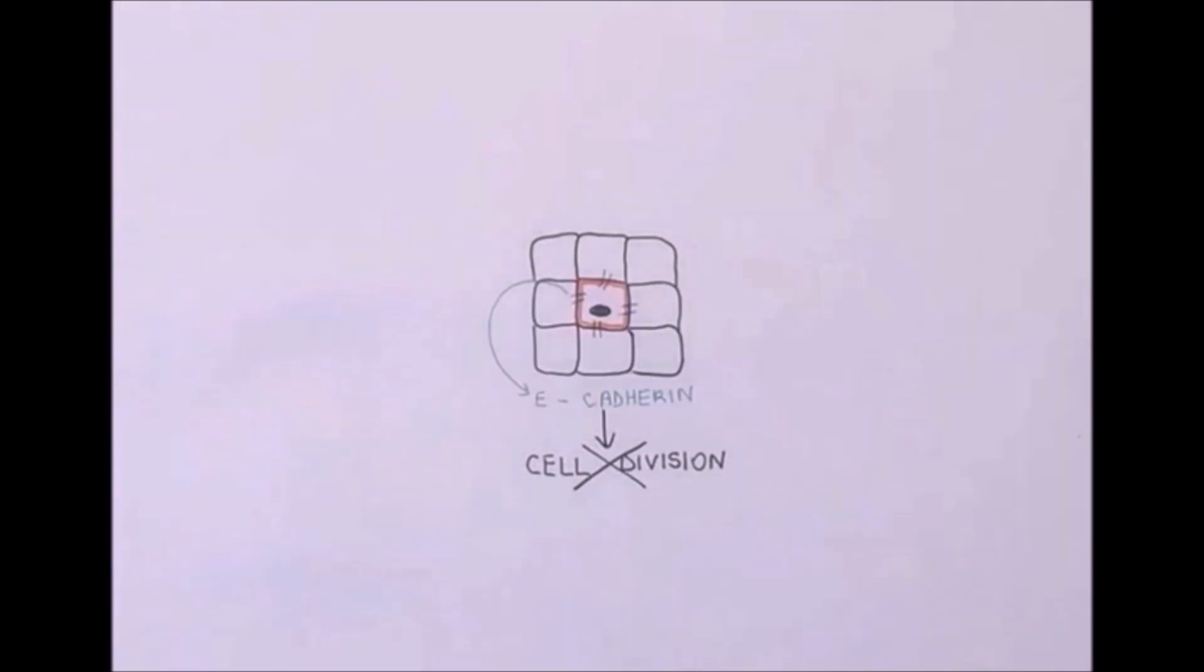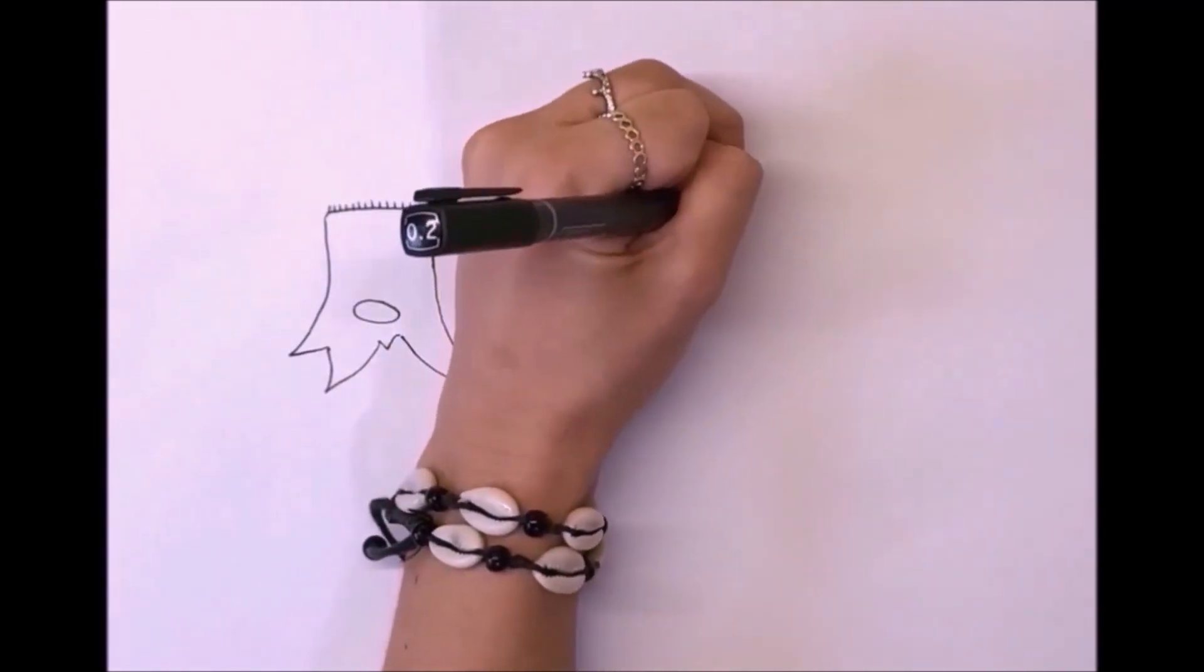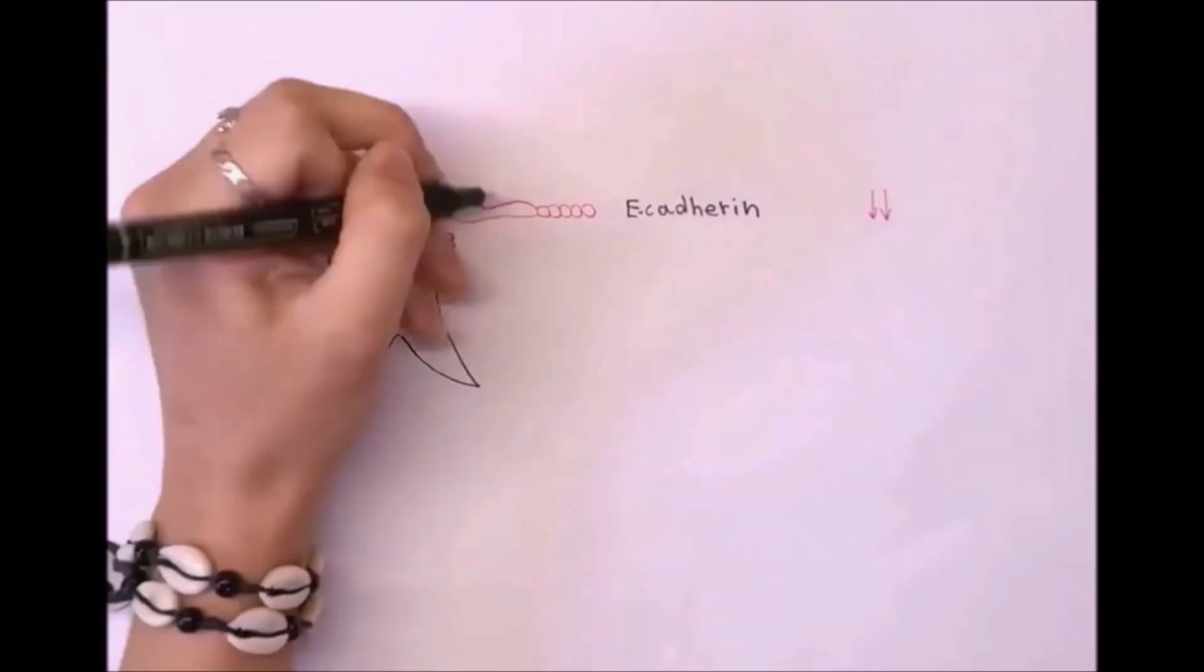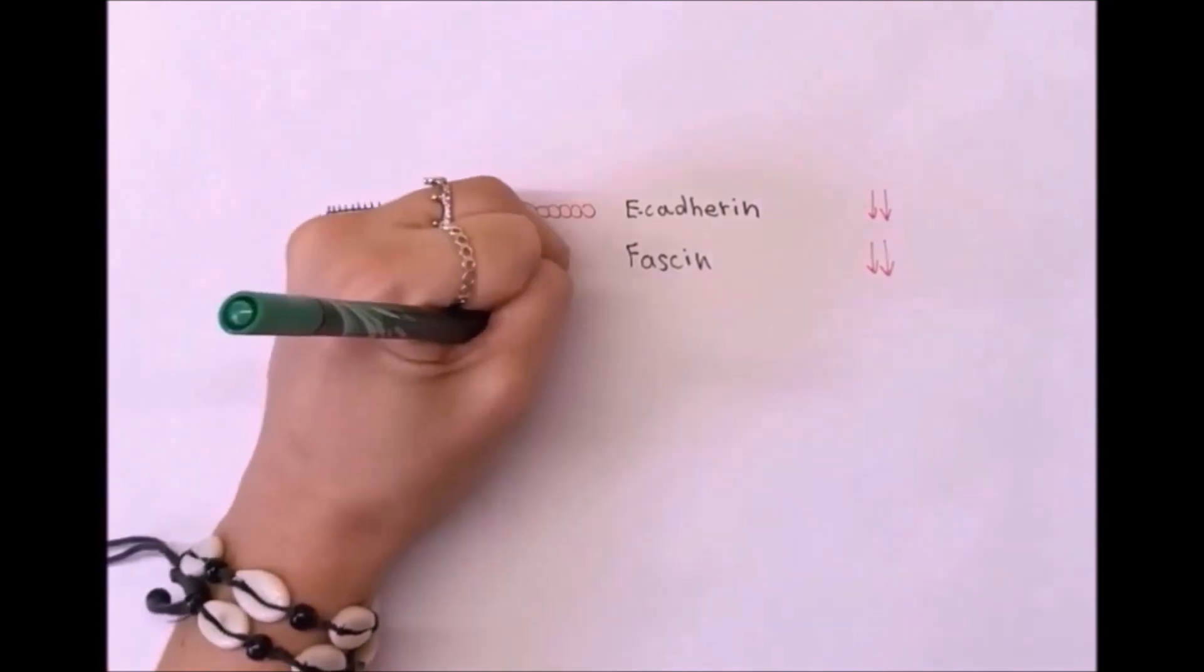The progressive loss of E-cadherin is a key step for EMT. Degradation of E-cadherin affects the gene expression of other molecules. First, the production of E-cadherin itself decreases. Second, the production of fascin decreases, due to a loss of polarity of the epithelial cell.